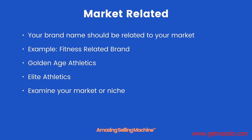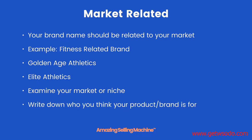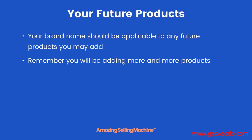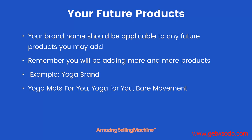So you need to examine your market or your niche. You've only got one product right now but you need to be thinking forward about other related products. Write down who you think your product or brand is for and your future products. Your brand name should be applicable to any future products you may add — remember you will be adding more and more products as your brand grows. An example: a yoga brand — you could have 'Yoga Mats For You,' 'Yoga For You,' or 'Bear Movement.'